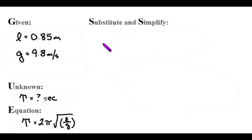All right, if I replace numbers for letters, I see the period equals 2 pi times the square root of my length is 0.85 divided by 9.8, and because there's parentheses, this is an indication that I need to do this math first.